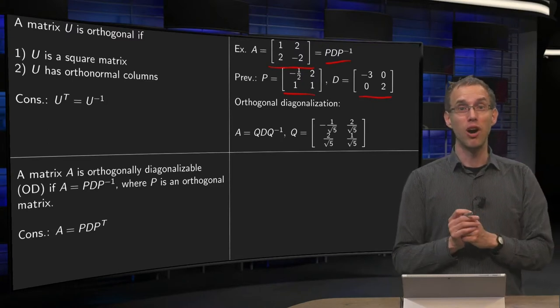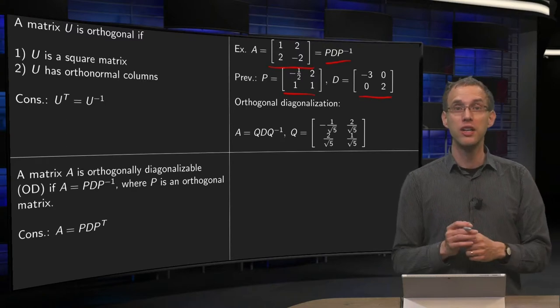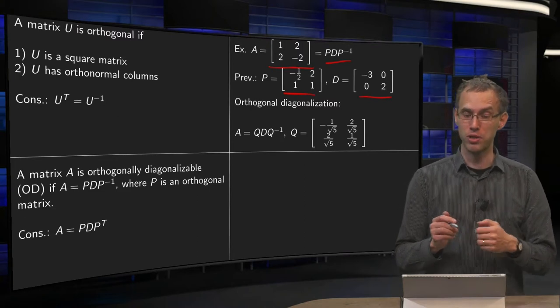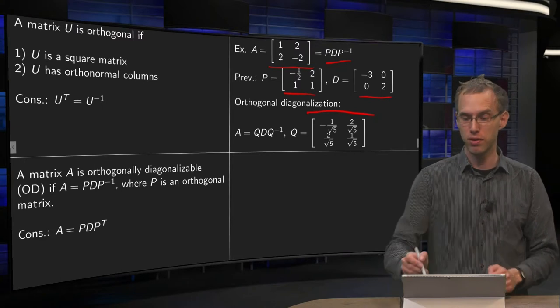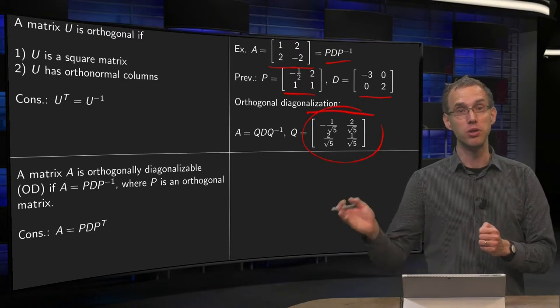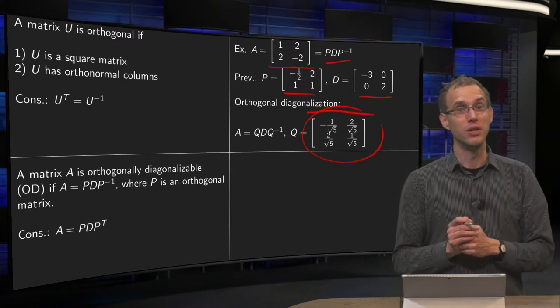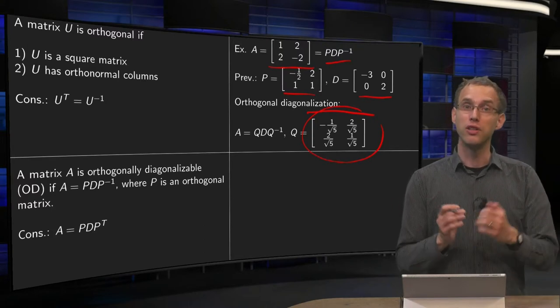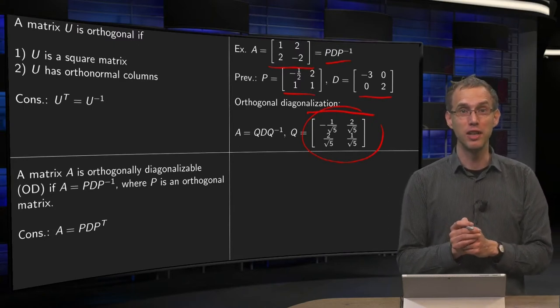In this case the columns of this P are already orthogonal. P is also square, so we can turn P into an orthogonal matrix by normalizing its columns. So we can form the matrix Q by normalizing the columns of P as follows. Here it is. And now we have A equals Q times D times Q inverse. But now this matrix Q is an orthogonal matrix, square, orthogonal columns of length 1.